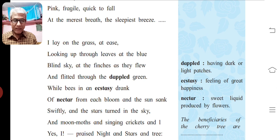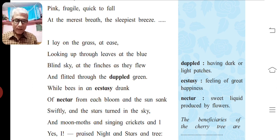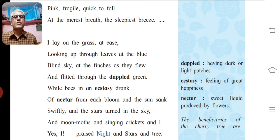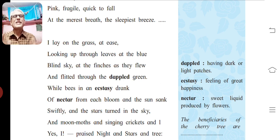Next line: 'At the merest breath, the sleepiest breeze.' Again alliteration — the consonant sound of B is repeated pleasingly. One more figure of speech is there in the same line: personification. Here the breeze is given the human quality of being sleepiest.